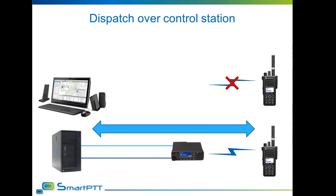The simplest system topology with control stations is a two-way connection via control station without additional IP connection to the repeater. In this case, the control station acts as a gateway to the radio network — the dispatcher uses it to send information into the network and receives all incoming information through the same control station. The main limitation is the inability to work simultaneously with more channels than the number of available control stations, which is most notable in trunking networks. For IP Site Connect, you need one control station per slot, or one control station with two channels. For Capacity Plus, you need to create a full pool of trunking channels on the control station.